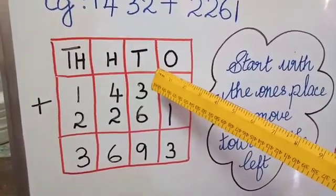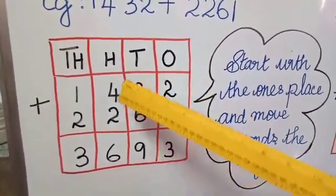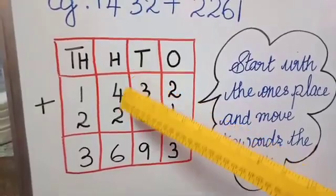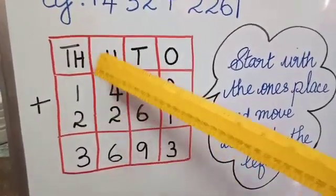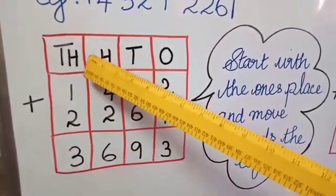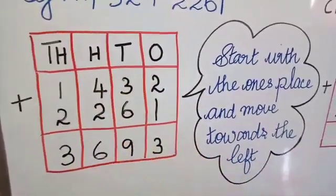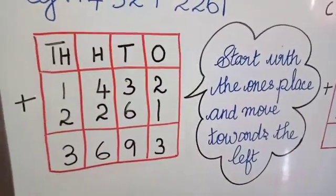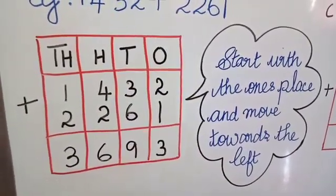And in the tens place, we have 3 plus 6 gives you 9. And in the hundreds place, we have 4 plus 2 gives you 6. And moving on to the thousands place, we have 1 plus 2 gives you 3. Keeping this in mind, we are going to check your answer using addition.